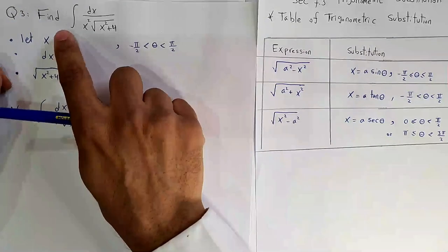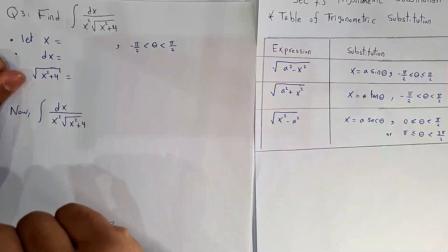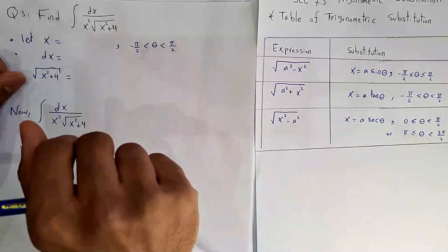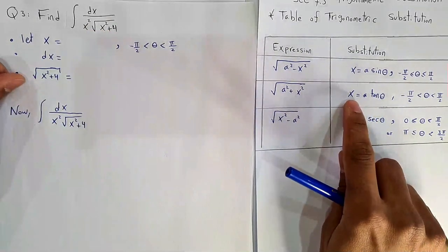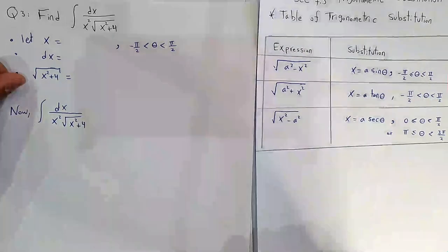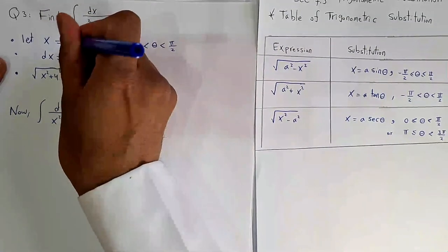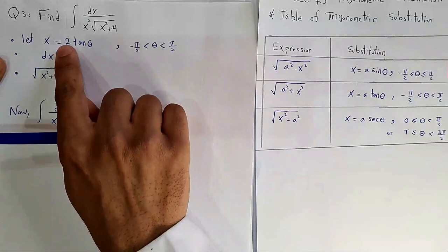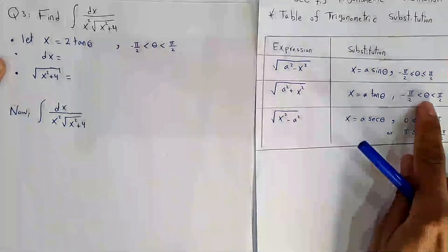Example 3: Integrate 1/(x² root(x²+4)). We have root(x²+a²) form, so use x = 2 tan θ, θ ∈ (-π/2, π/2). Then dx = 2 sec²θ dθ. Working out the root: root(4tan²θ + 4) = 2|sec θ| = 2 sec θ, since cosine (and secant) is positive on this interval.